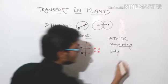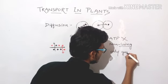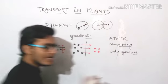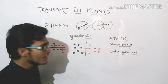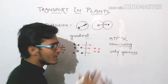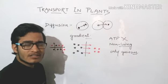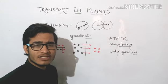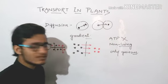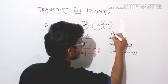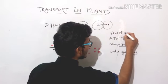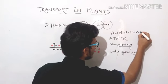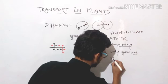Diffusion is the only means of gaseous exchange. It does not require any ATP, it does not require any living system, it is the only method for gaseous exchange, and it is a short-distance transport. It is also quite slow.